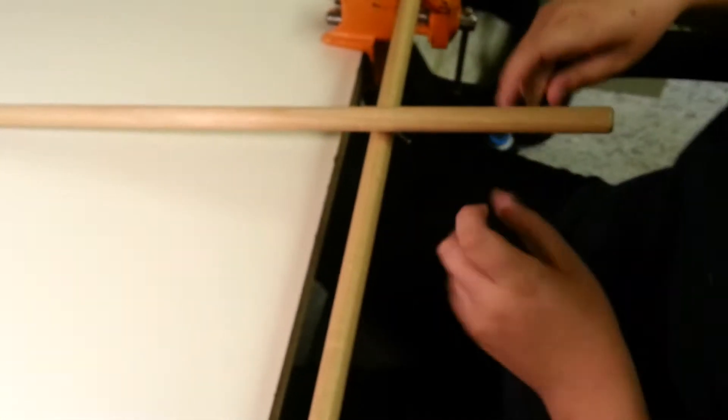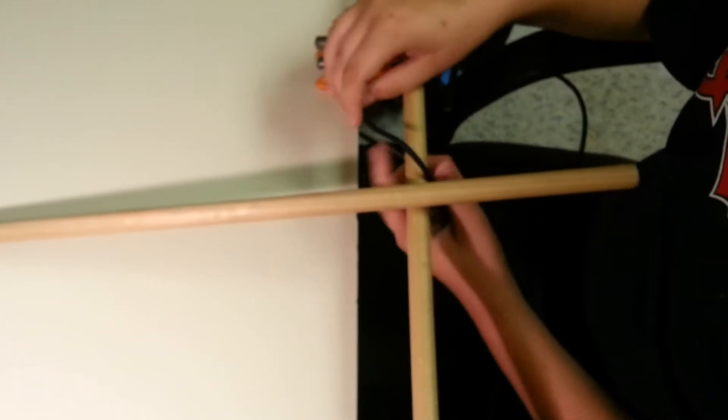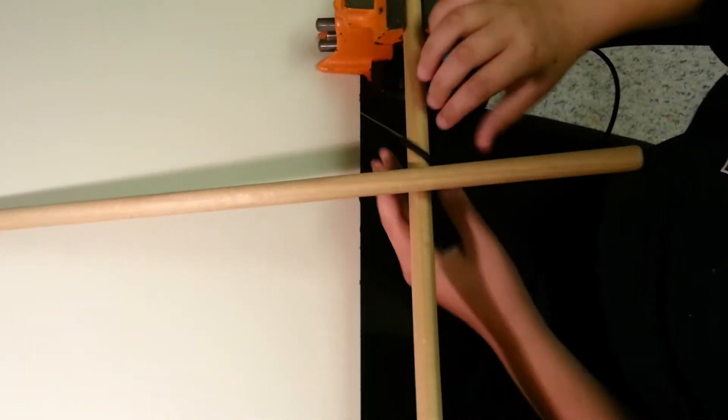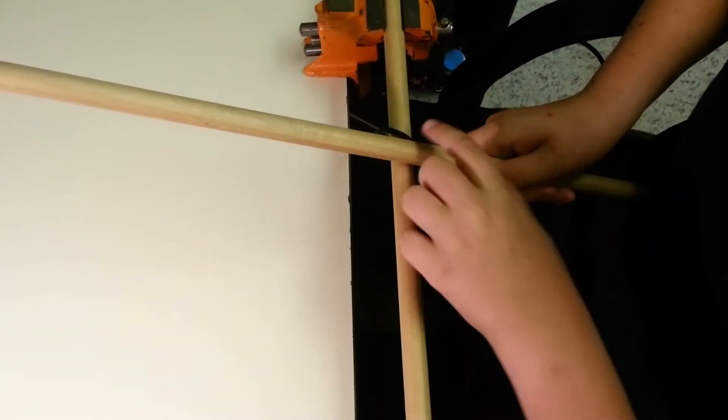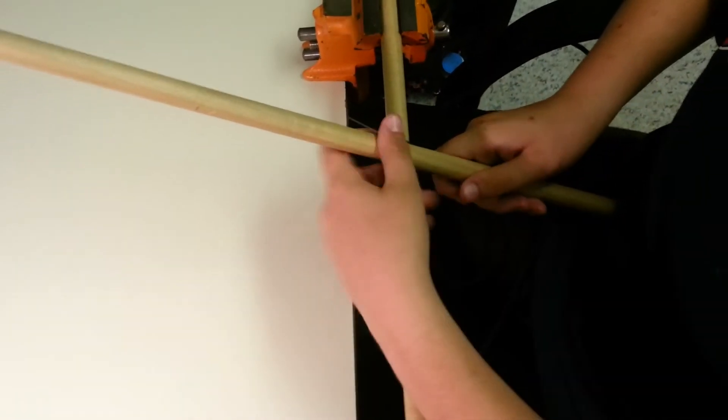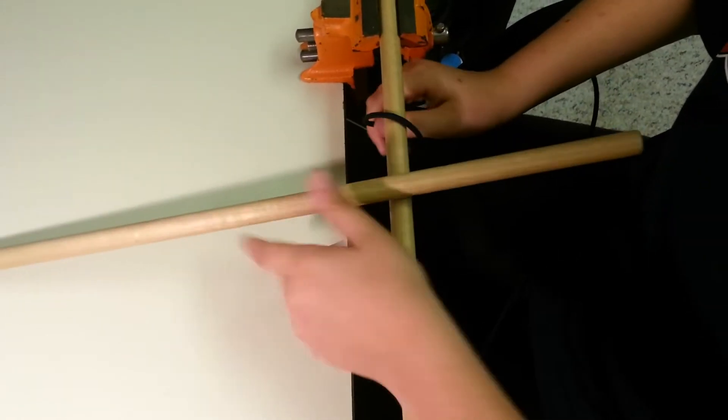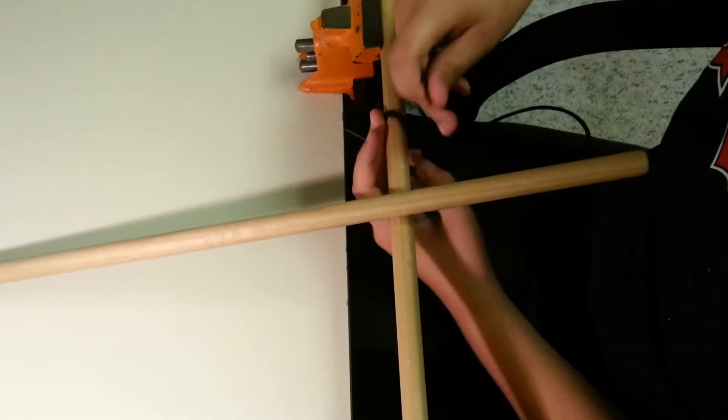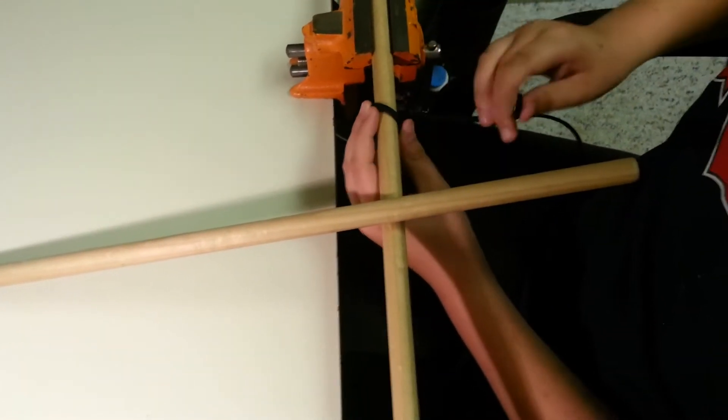I have two dowel rods attached to a vise. This lash is used so you can take two sticks and put them in a T-type formation. There's other lashings to do different stuff, but this one's just for that.